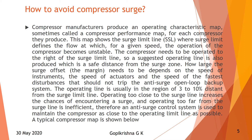There is a region called 3 to 10% distance from the surge limit. You should not always operate near the surge limit, and you should not always operate in the inefficient region. Therefore, an anti-surge control system is used to maintain the compressor as close to the operating limit as possible.